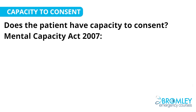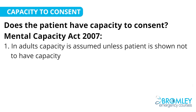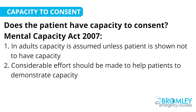Bringing out a few points from this: firstly, all adults are assumed to have capacity in the first instance. We always assume someone has capacity unless they're shown not to by a capacity test. When we're assessing someone's capacity, we do need to make sure that we've done all that we can to help the individual to demonstrate capacity.